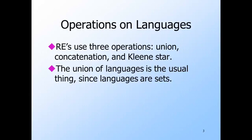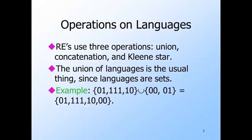The union of languages is the usual set union. Here is a simple example: two languages, one with three strings and one with two strings. The string '01' happens to be in both, so it will appear once in the union. The strings '11', '10', and '00' are also there. That's the common notion of union on sets or languages.